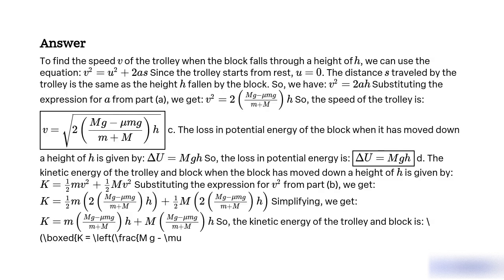To find the speed v of the trolley when the block falls through a height h, we can use the equation v² equals u² plus 2as. Since the trolley starts from rest, u equals 0, and the distance s travelled by the trolley equals the height h fallen by the block. So we have v² equals 2as. Substituting the expression for a, we get v² equals 2(mg minus mu MG) divided by (M plus m) times h.